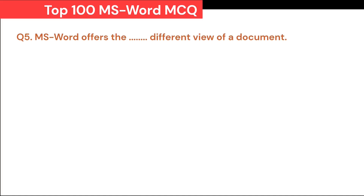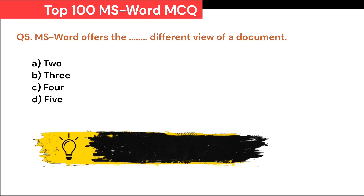MS Word offers Dash different views of a document. A. 2. B. 3. C. 4. D. 5. Correct answer is D. 5.